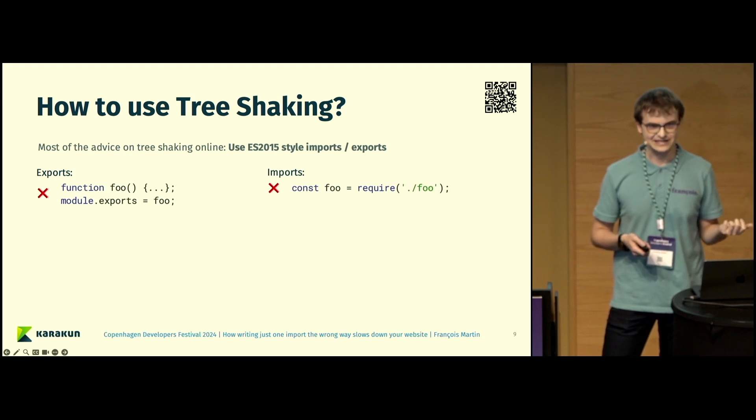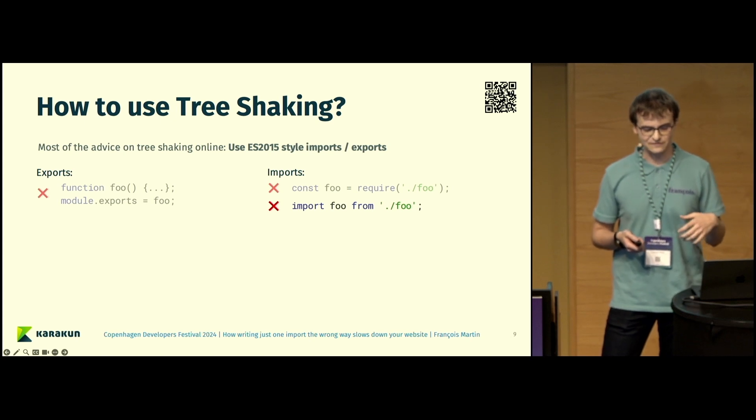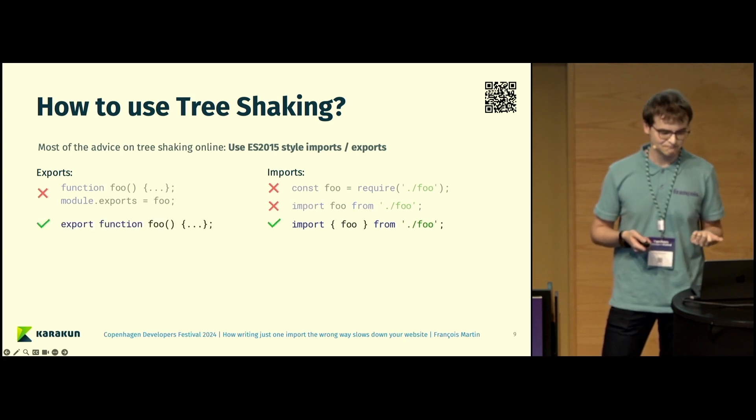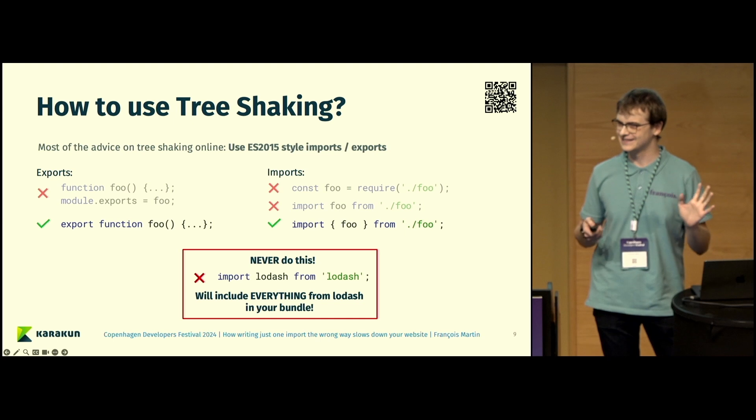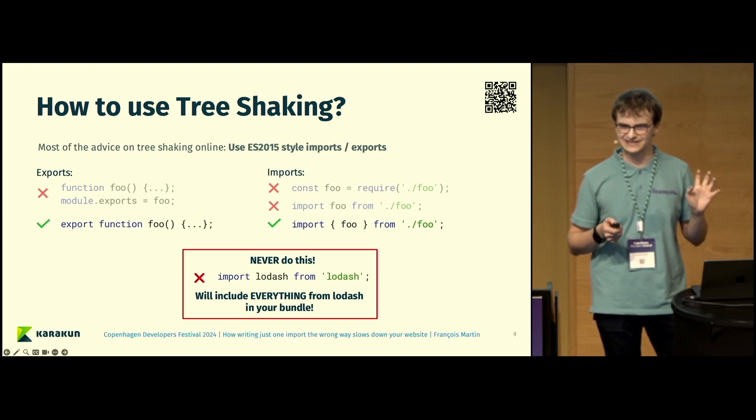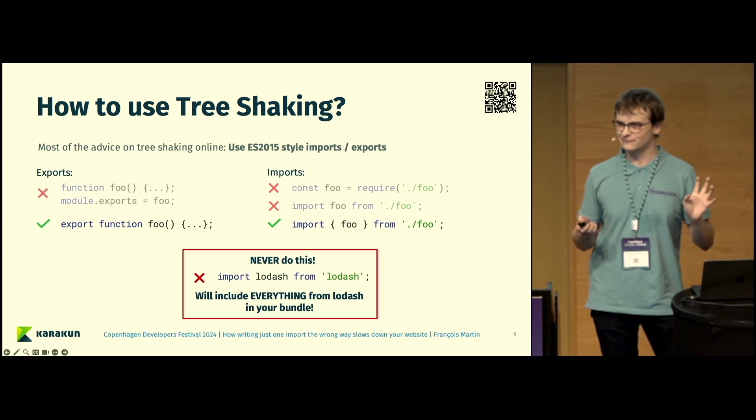How this looks like is you can see, for example, here, those are the exports that we cannot use to be able to be tree-shaken. Those are CommonJS imports. This one is also an import which is ES2015. But if the foo file contains more methods than just foo, they will be imported as well, so make sure you don't use them. According to the information you find online, if you just use it like this with ES2015 style imports and exports, you should be fine. Actually, if you only take home one thing, then please just never import things in this way. Because if you do it like this, this will really include everything from Lodash into your bundle. No bundler can help you here.